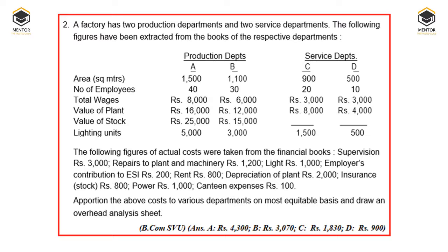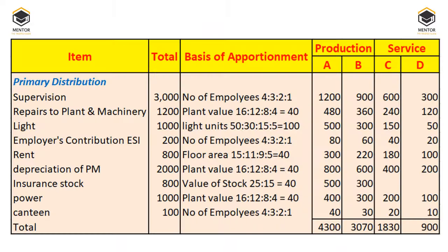We will solve this problem quickly. The answer is presented as an overhead distribution summary. Supervision is divided on the basis of number of employees because supervision is performed over employees. Repairs to plant is apportioned on the value of plant, since value of plant is the basis for dividing that expenditure across production and service departments.